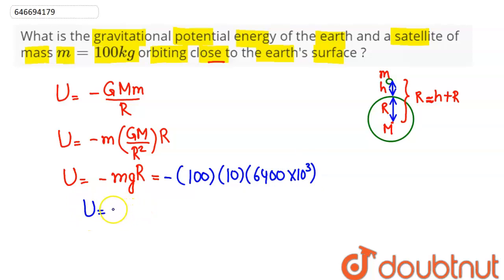The corresponding gravitational potential energy comes out to be minus 6.4 times 10 to the power 9 joules. This is the gravitational potential energy of the earth and the satellite very close to the earth's orbit, which is our answer.